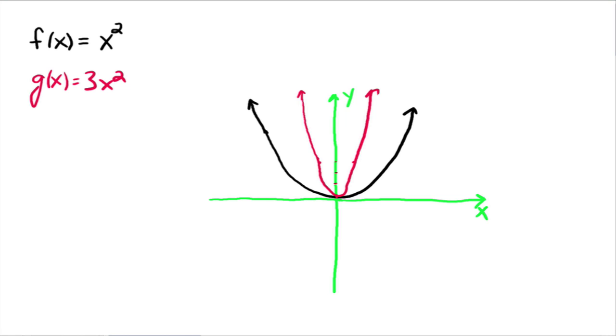So now let's look at h of x. h of x equals, this time let's do 1 third times x squared. So now what we're really doing here is we're taking every y value from our original function and multiplying it by a third.